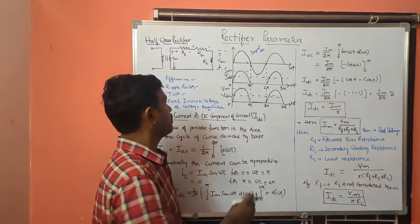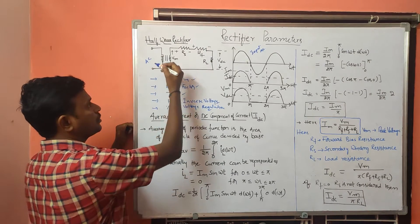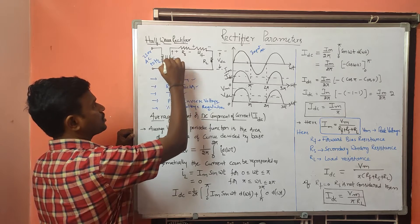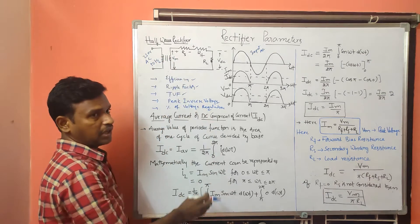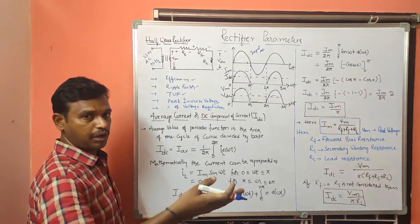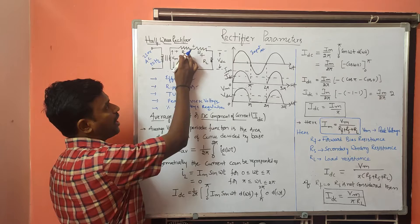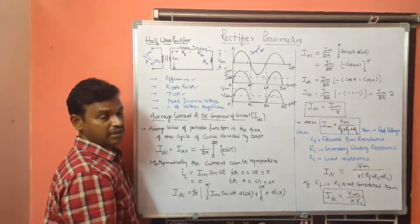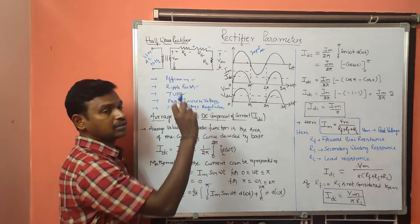I am taking here the half-wave rectifier circuit. We are applying an AC signal of 230 volts and 50 hertz, and using a step-down transformer. The secondary winding has fewer turns than the primary winding. RS is the secondary winding resistance, RF is the forward resistance of the diode, and RL is the load resistance.